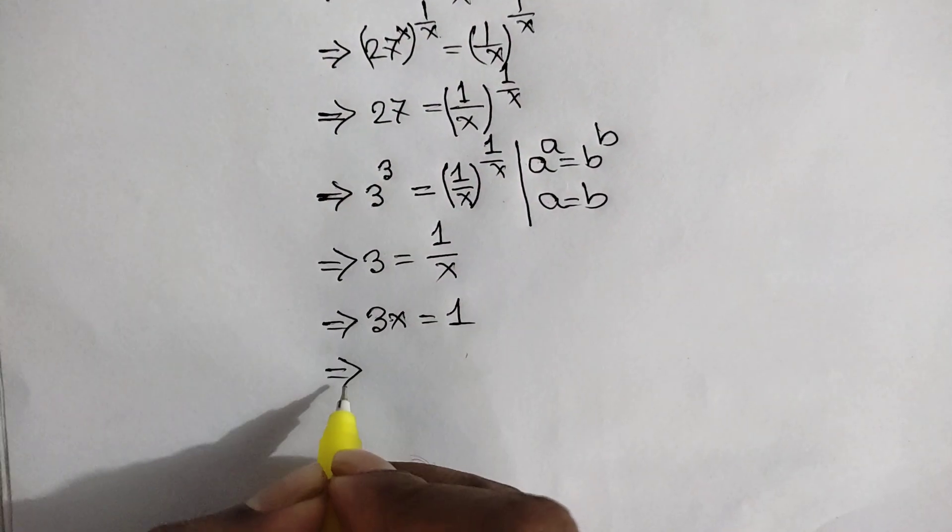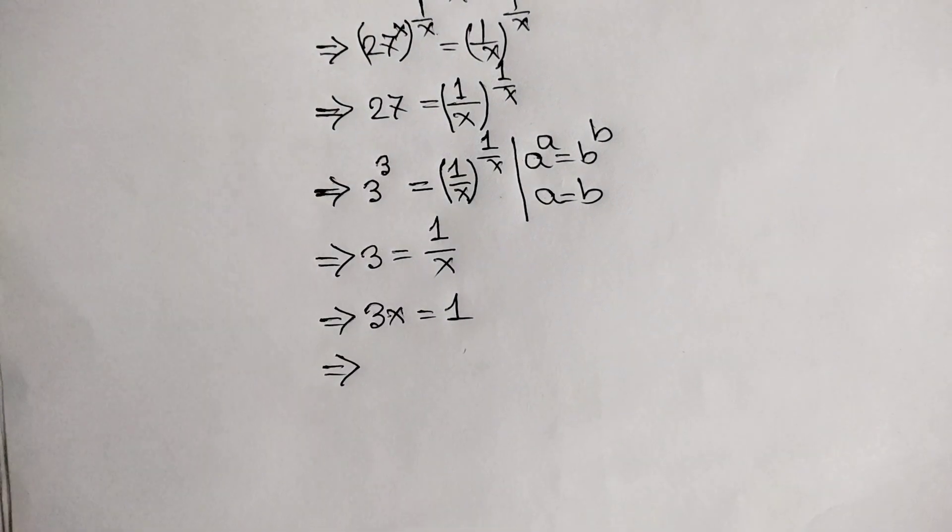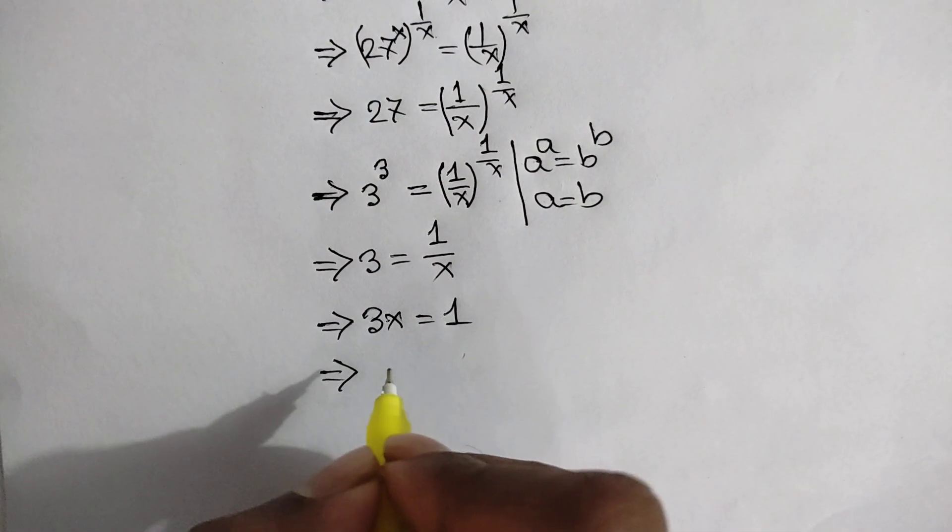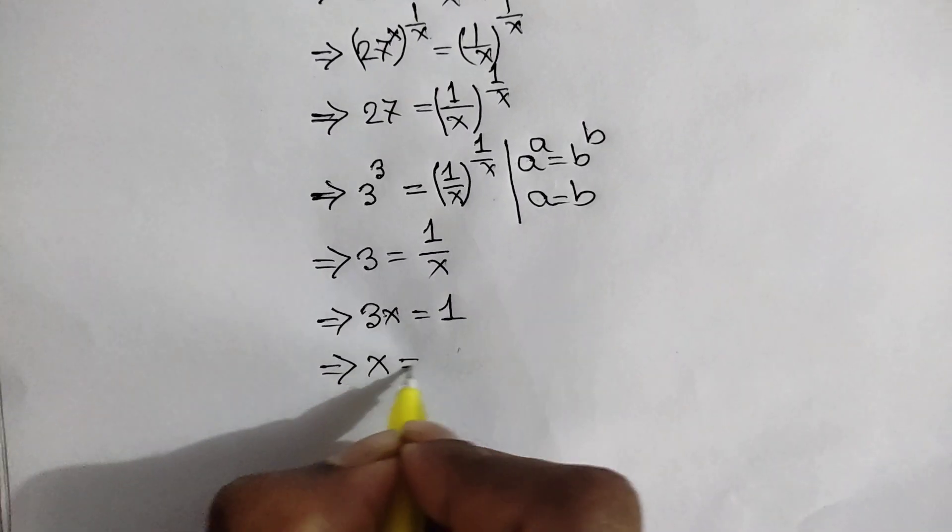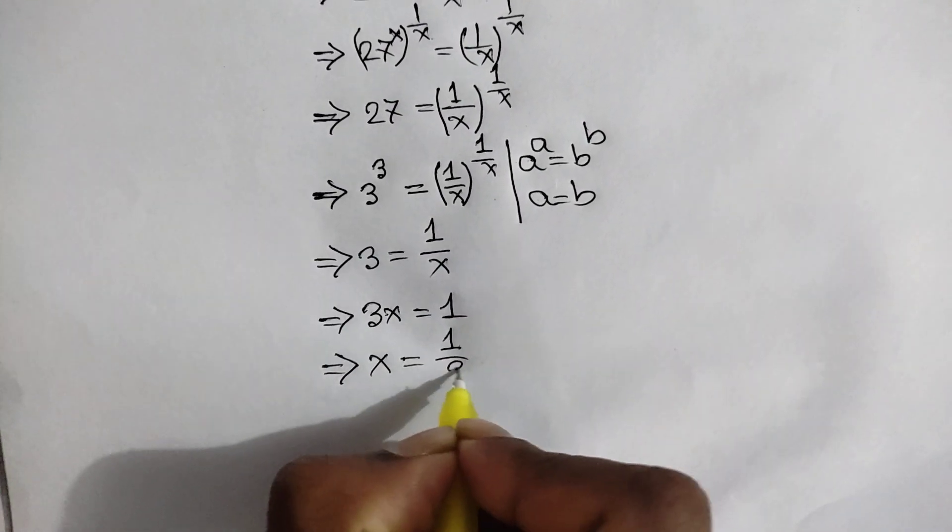Now, dividing both sides by 3, we can write x is equal to 1 over 3.